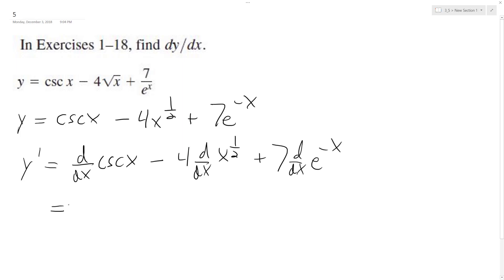Okay, so cranking through: this equals negative csc x cot x minus—the derivative of x raised to the one-half is one-half x raised to the negative one-half. So that 4 goes over that 2, which is 4 times one-half, giving x raised to the negative one-half plus—and then pull down the derivative, so we get 7 times negative 1 e raised to the negative x.